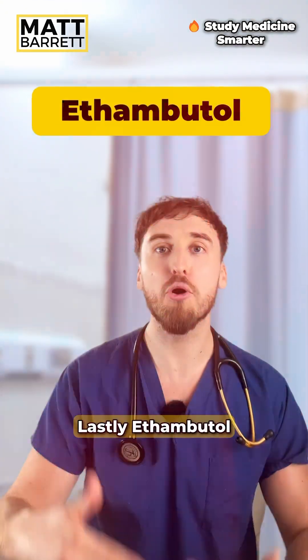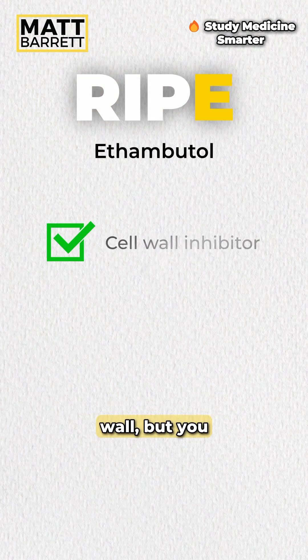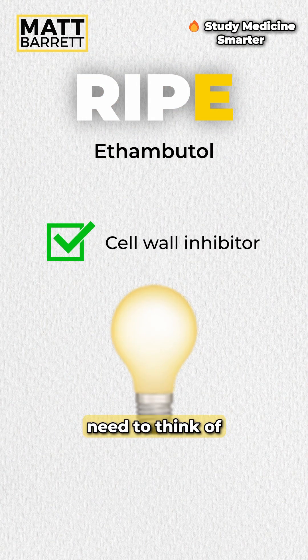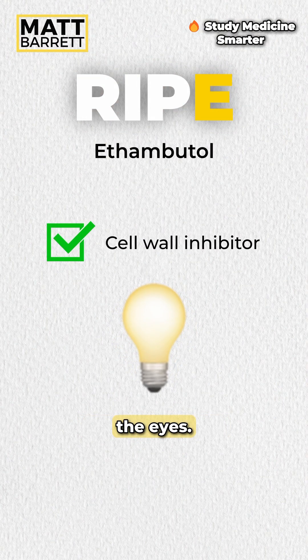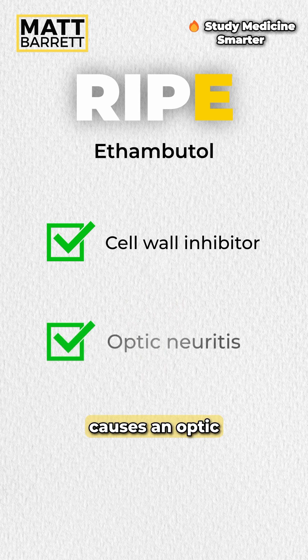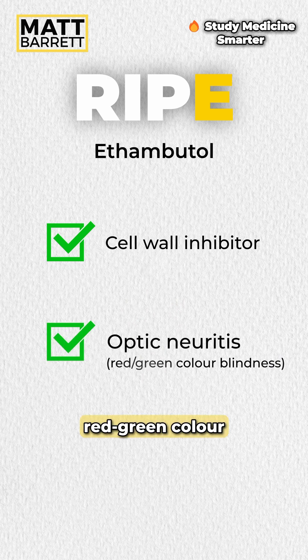Lastly, ethambutol works on the cell wall, but you need to think of the eyes. It classically causes optic neuritis, commonly manifesting as red-green colorblindness.